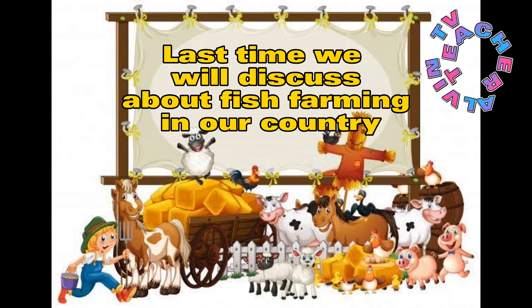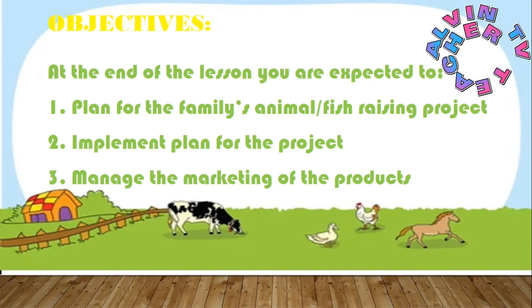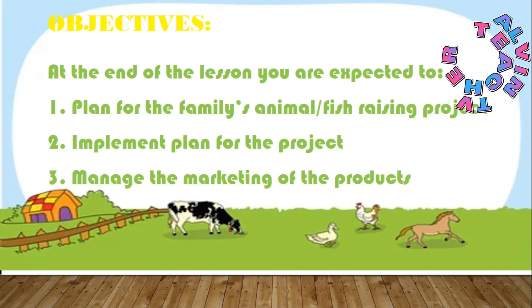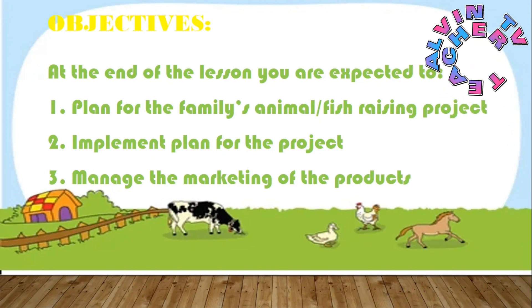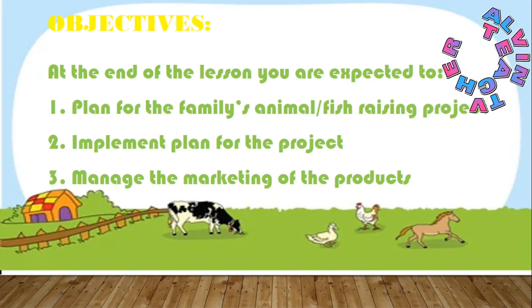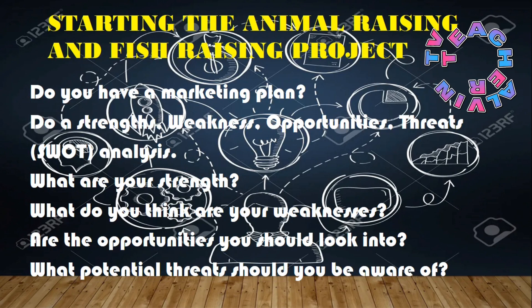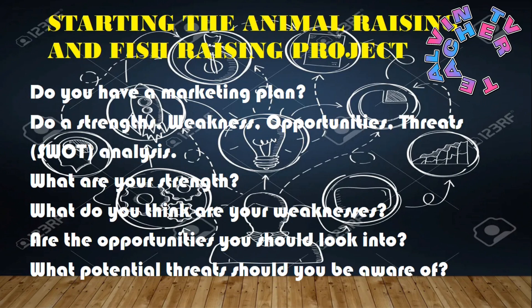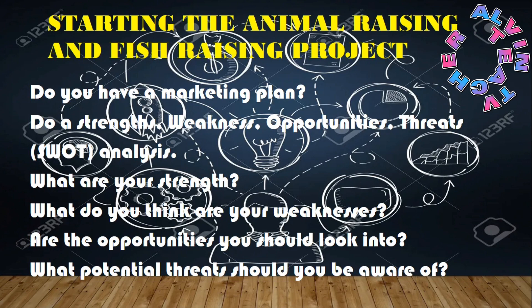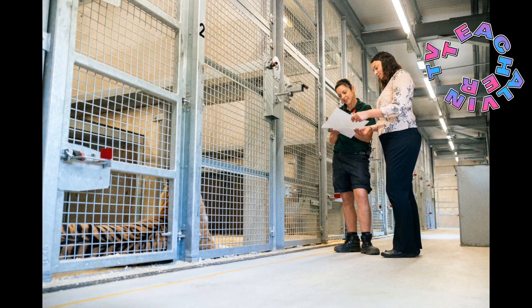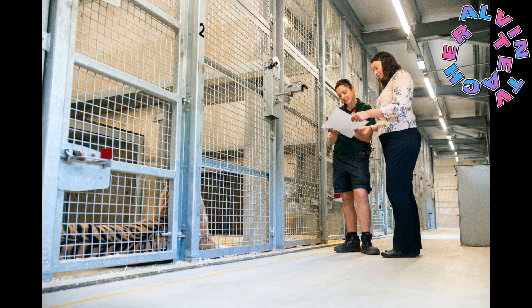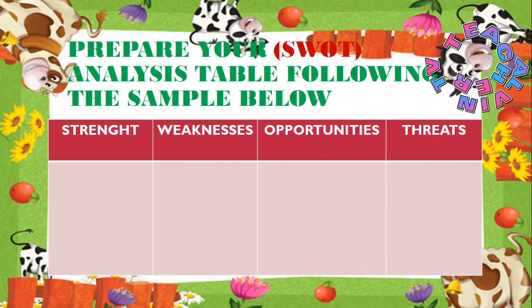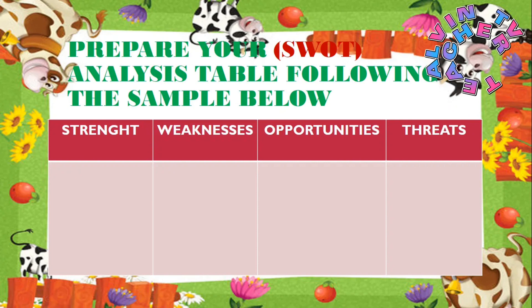For today's objectives, at the end of the lesson you are expected to plan for the family animals and fish raising project, implement the plan for the project, and manage the marketing of the products. Do you have a marketing plan? Do a Strength, Weakness, Opportunities, Threats — or SWOT — analysis. What are your strengths? What do you think are your weaknesses? What opportunities can you look into? What potential threats should you be aware of? Prepare your SWOT analysis table following the sample below.